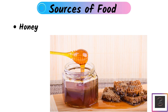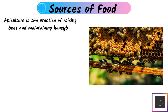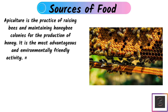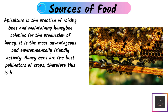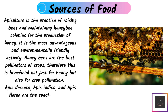Honey: Apiculture is the practice of raising bees and maintaining honey bee colonies for the production of honey. It is the most advantageous and environmentally friendly activity. Honey bees are the best pollinators of crops, so this is beneficial not just for honey but also for crop pollination. Apis dorsata, Apis indica, and Apis florea are the bee species available in India.